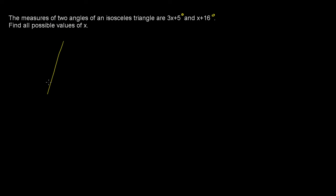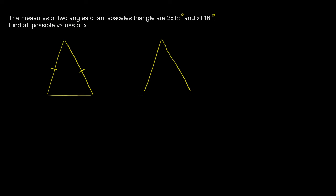Let's draw ourselves an isosceles triangle or two. So it's an isosceles triangle, like that and like that. We know from what we know about isosceles triangles that the base angles are going to be congruent. So that angle is going to be equal to that angle.